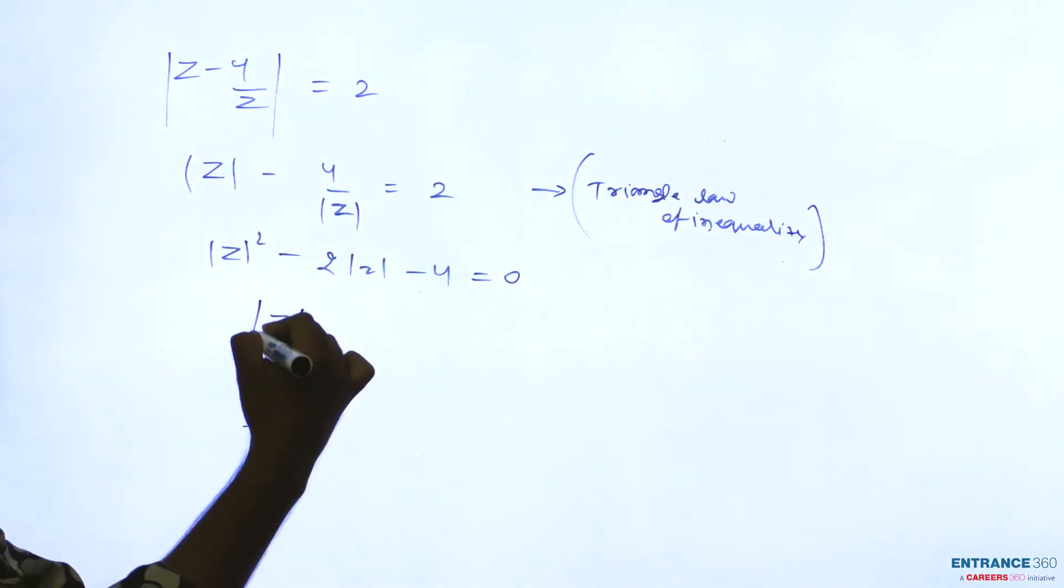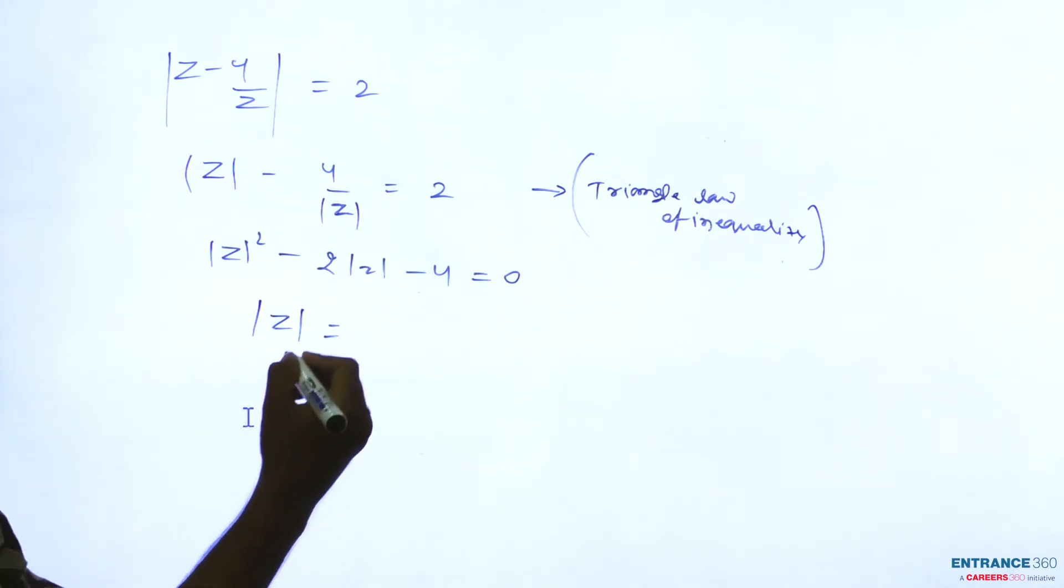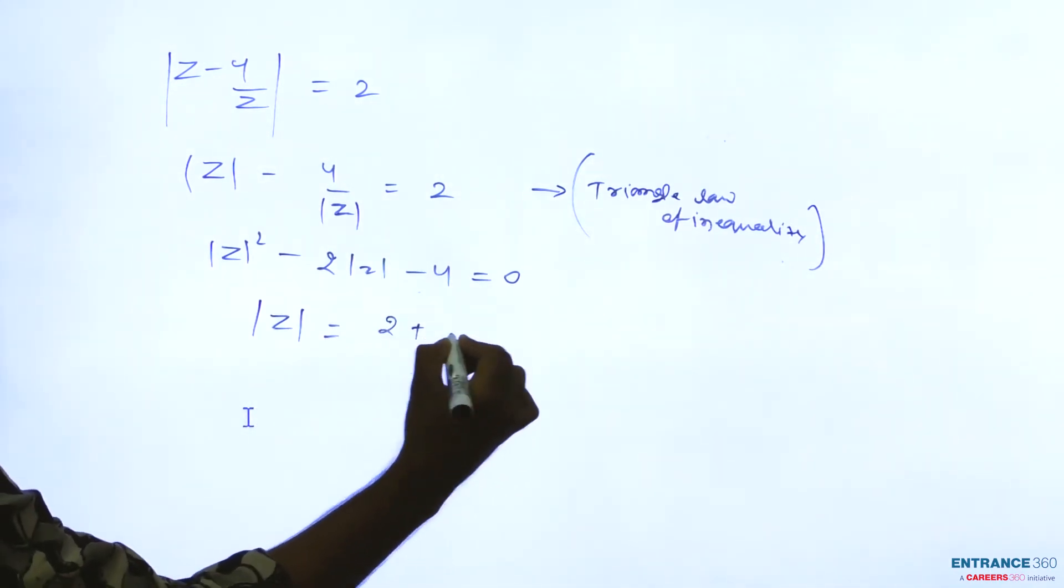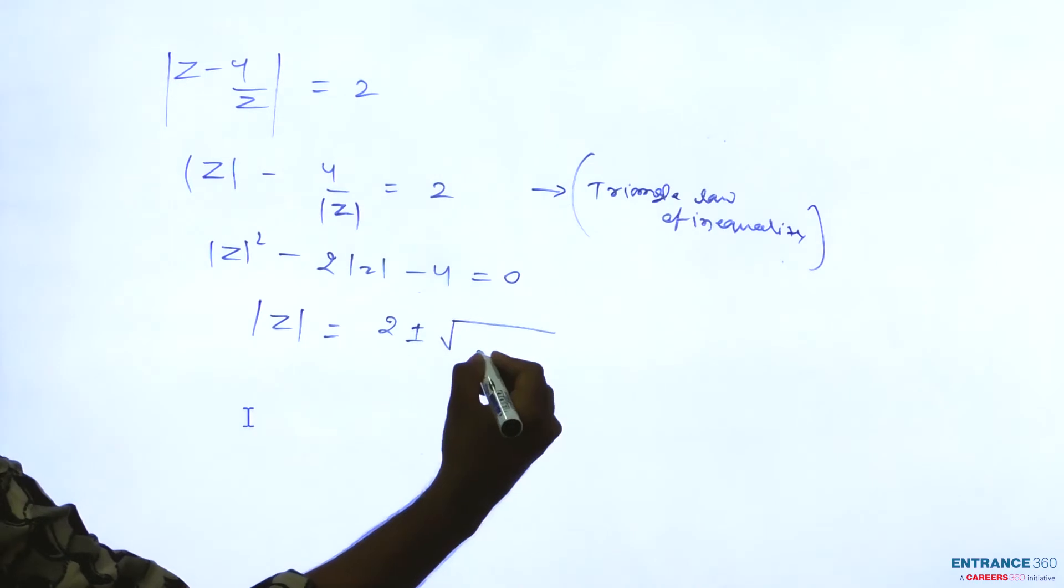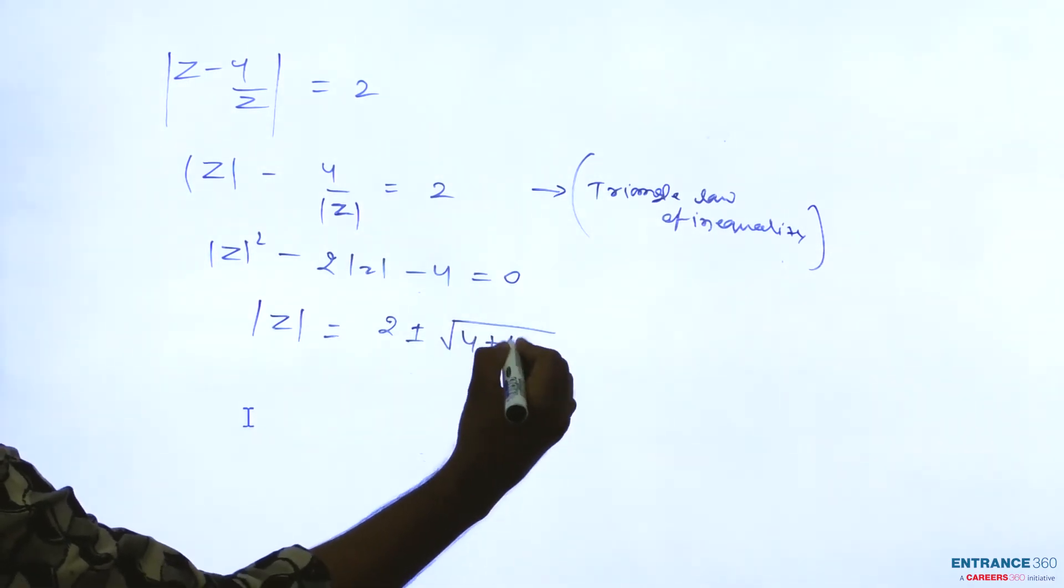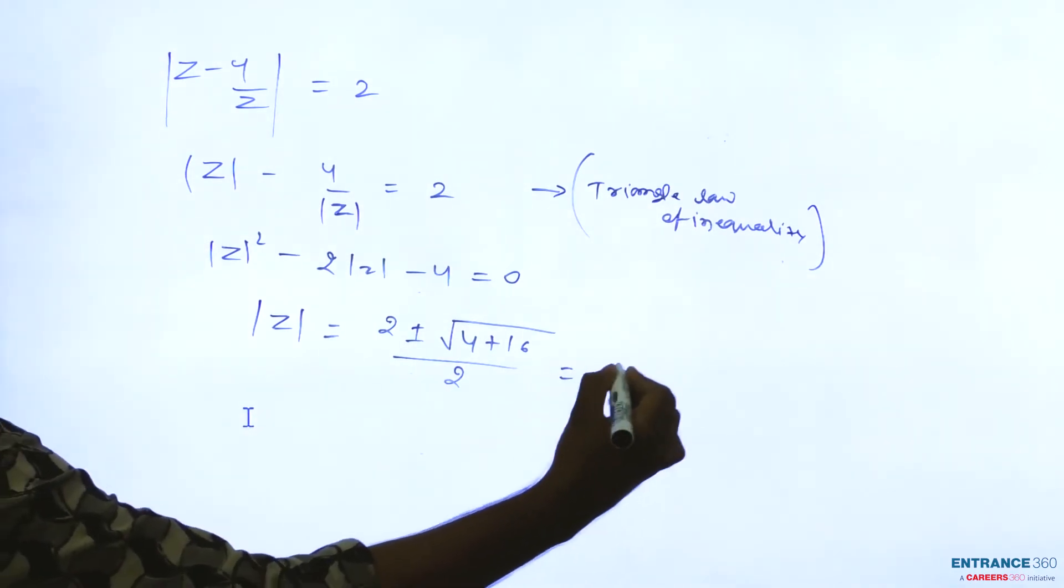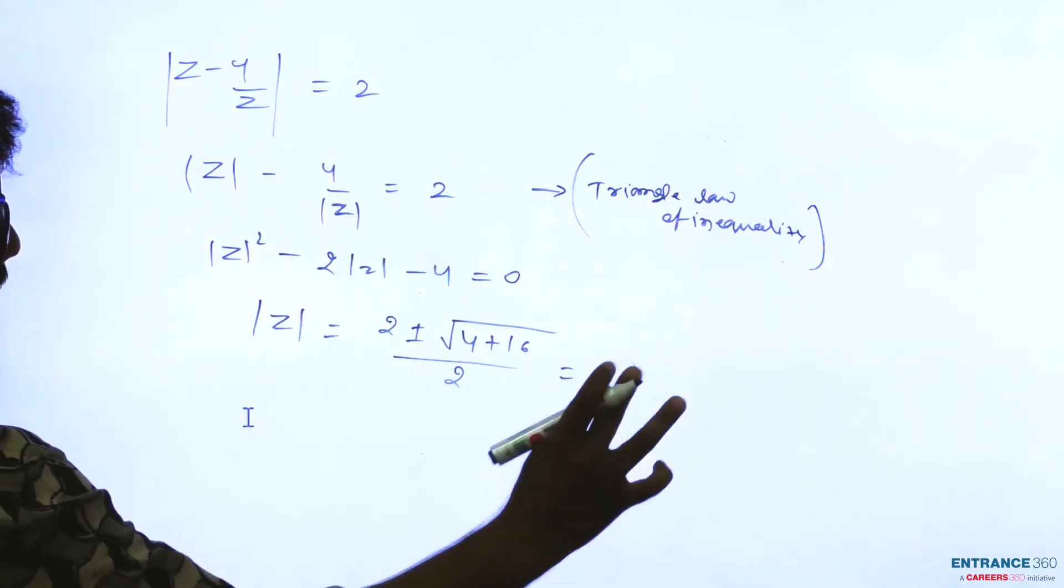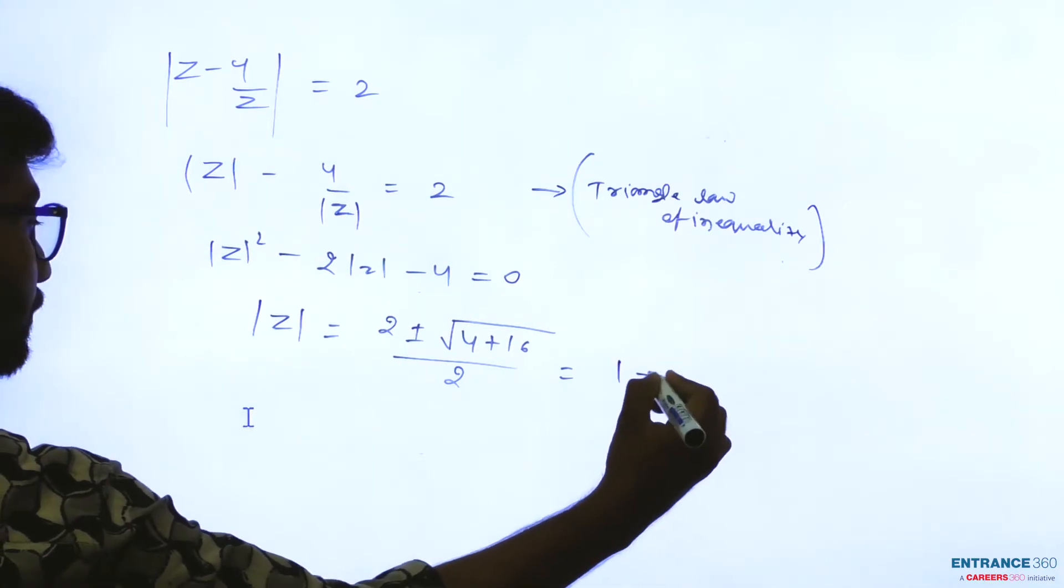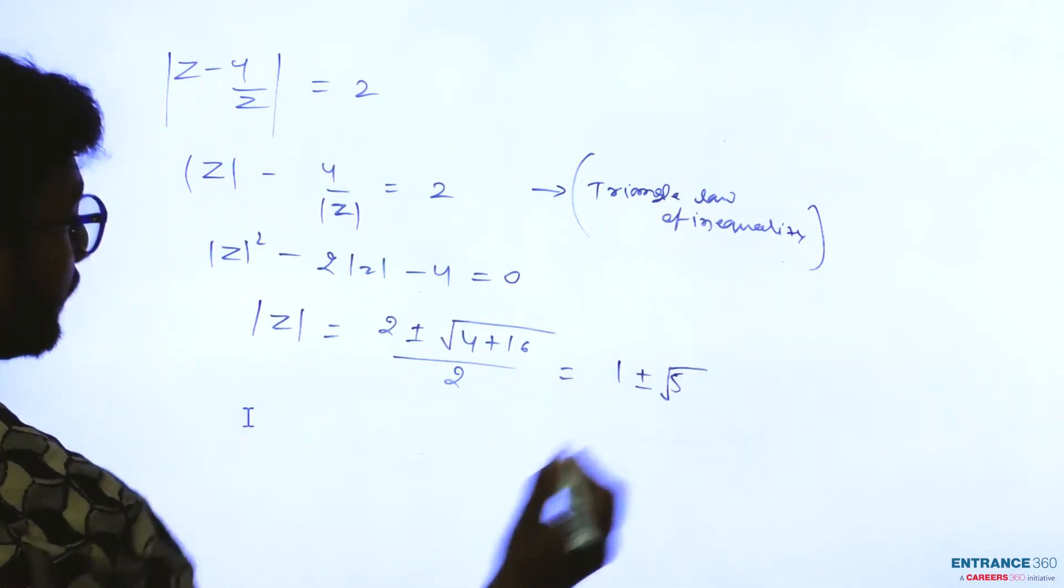Then you can find mod z equal to 2 plus minus square root of 4 plus 16, all by 2, which means 1 plus minus root 5.